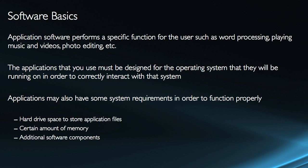Each application, each software program, may have its own system requirements, and in order to function properly, they may require certain things. This may just be an amount of memory or drive space, but it could also include a certain type of video card, a certain connection, or additional software components. For instance, sometimes you install a program that wants to install additional programs.